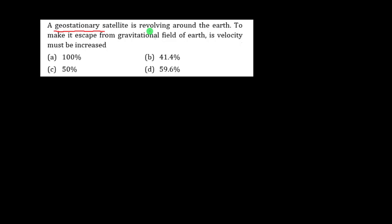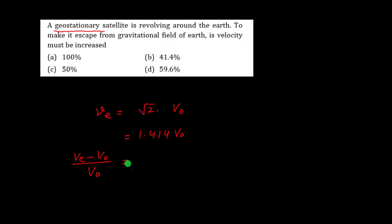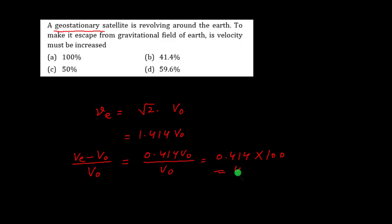A geostationary satellite is revolving around the earth. To make it escape from the gravitational field, there is a relationship: Ve = √2 · Vo, which is approximately 1.4142 · Vo. The increase in speed must be (Ve − Vo)/Vo = 0.4142, which is 41.4 percent. So option B is the correct option.